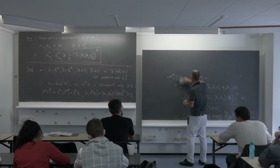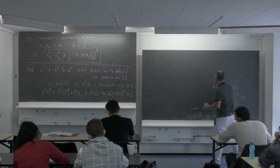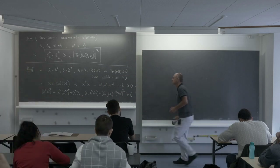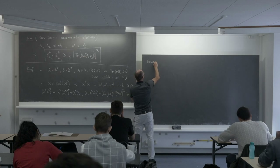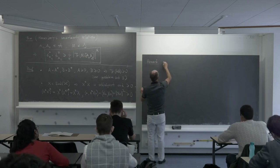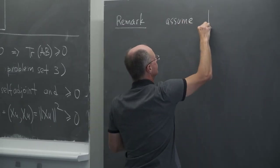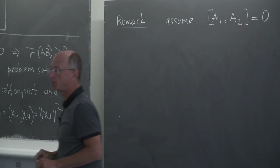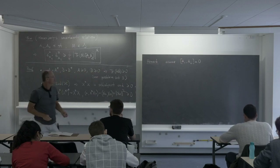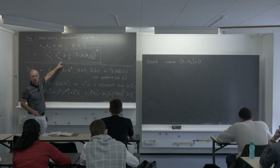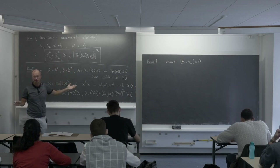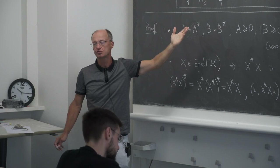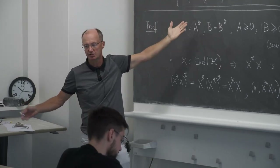What happens if the commutator is zero? At that point the Heisenberg uncertainty says nothing — the right-hand side is zero, the left-hand side is a product of two non-negative quantities, and the inequality is trivially satisfied. However, we actually know more.